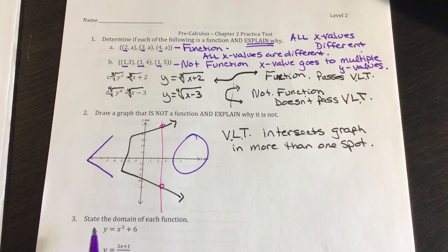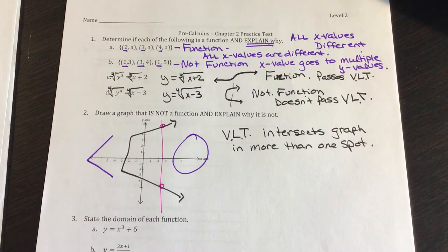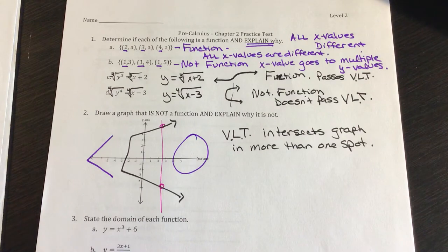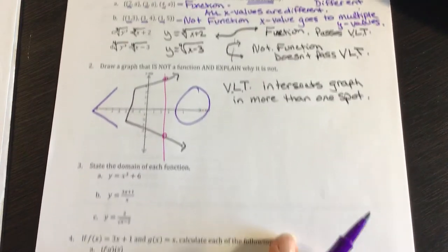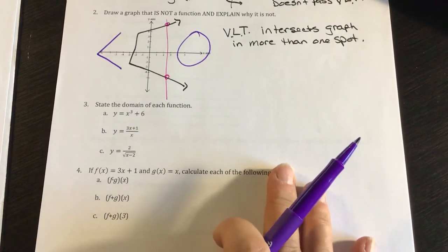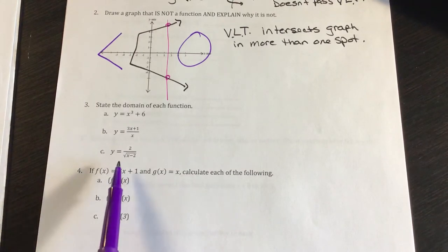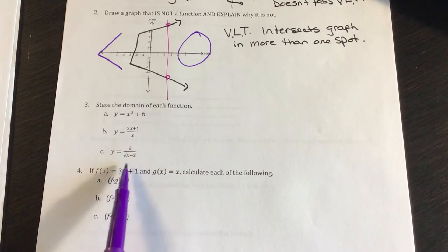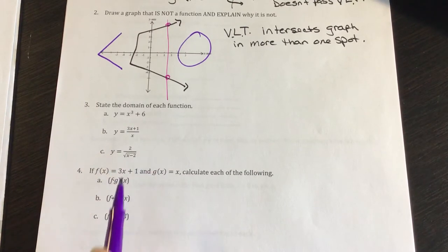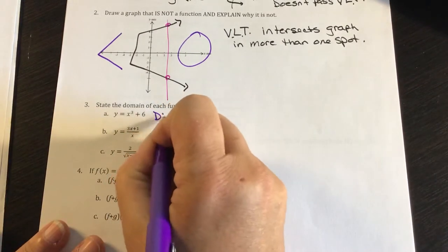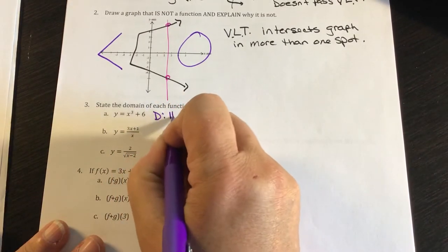Number 3 says to state the domain of each function. Most of the time our domain is all real numbers, except when I see a variable in the denominator — like in Part B — or a variable inside a square root — like in Part C. Otherwise, the domain for Part A is all real numbers.